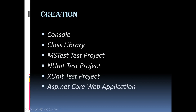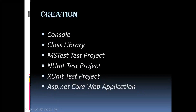Initially, MS Test didn't have a way to pass parameters into your unit test, so a lot of people opted to use NUnit Test. Later, with V2, MS Test supports parameters too, so the difference between these frameworks has lessened now. NUnit Test is open source and provides strong support for data-driven tests.